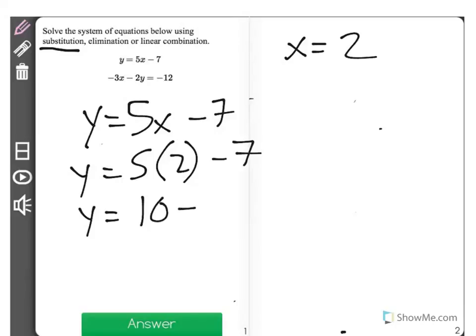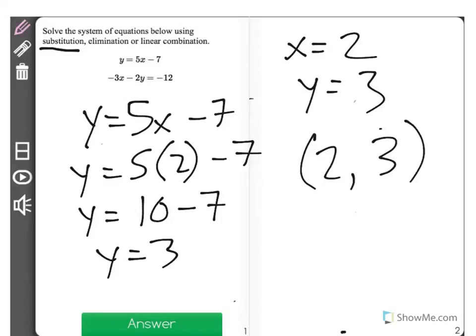Well, that means that y equals 10 minus 7 and y equals 3. So, we could write this as our solution set as 2, 3 for the correct answer.